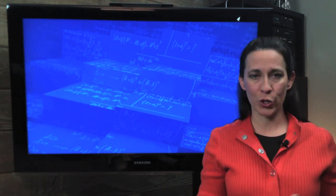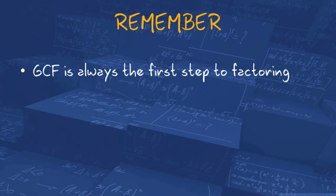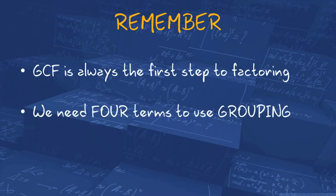If you made any errors, be sure and correct them. A couple of things to remember. Even though we didn't have any GCFs here, we still have to look for it. Always, always, always. First step. Also, we need four terms to factor by grouping. We'll talk about trinomials here in the next segment.